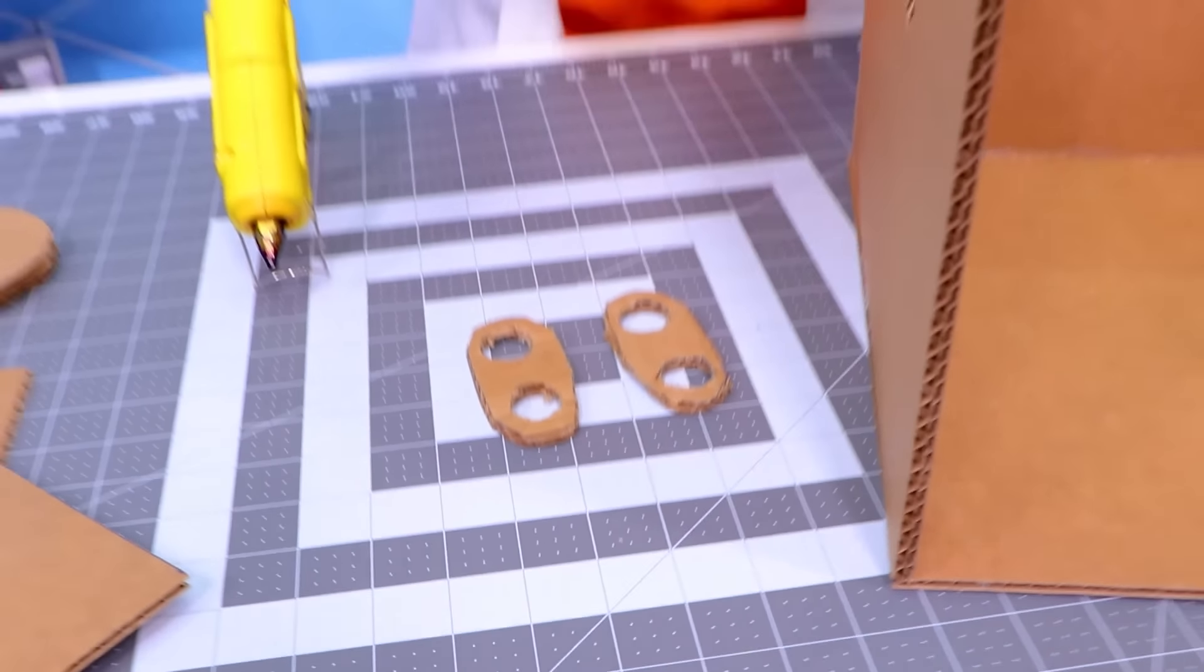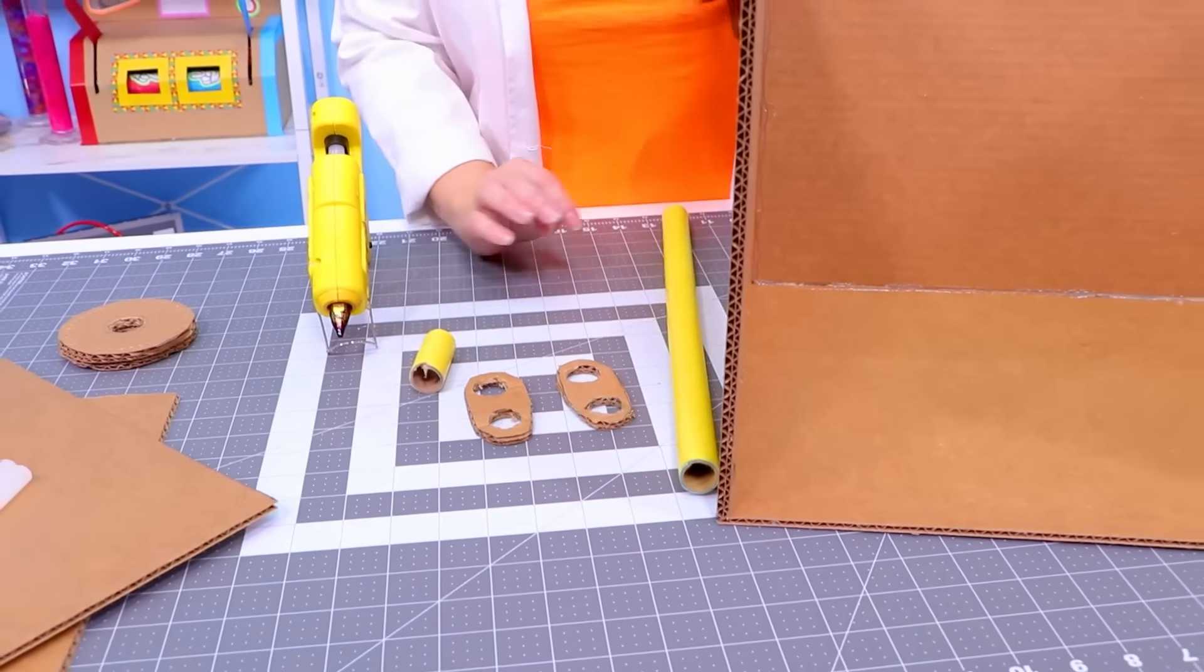so we can work on our handle! Now for handle, we're gonna use our cardboard pieces, and we're gonna use some tubes! Now to start our handle construction, we are going to hot glue our cardboard cut-out pieces. Now when using things like hot glue, be sure to ask an adult for help!